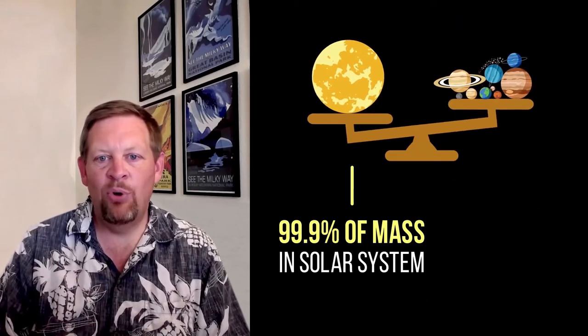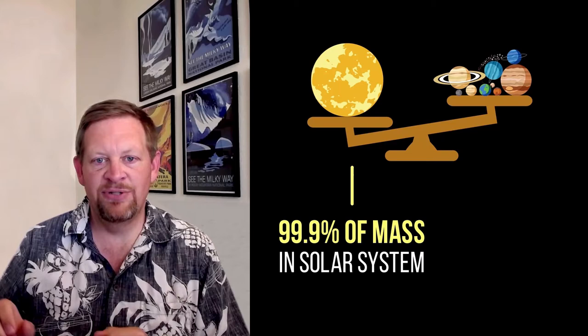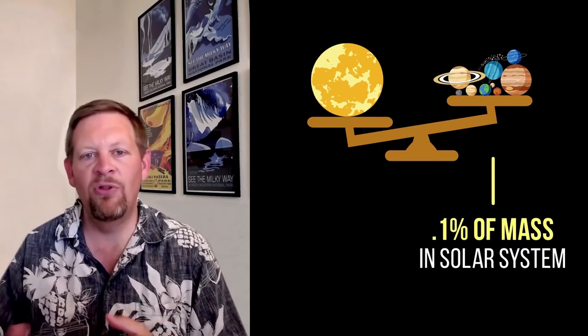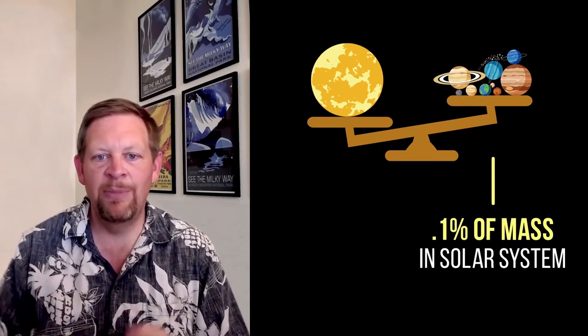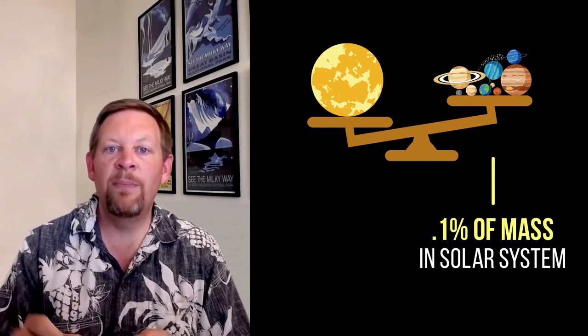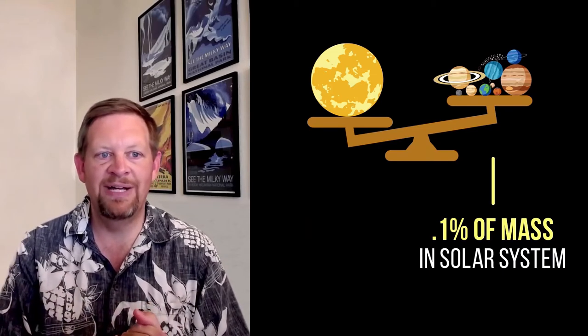About 99.9% of the mass in the solar system is in the Sun. Everything else in the solar system—all the planets, the asteroids, the comets, even us—they make up that tiny little remaining 0.1% of the mass.